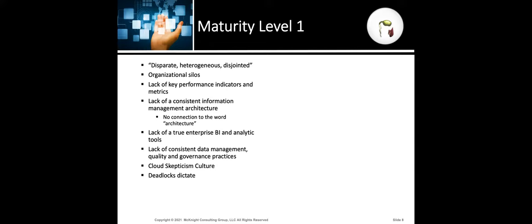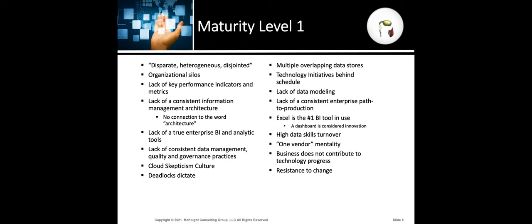Deadlocks dictate in these organizations — meaning you need 25 people to raise their hand before something can really happen, and if one person isn't on board, everything holds up even though the rest want to move forward. That is not a mature organization. Multiple overlapping data stores — you have the same data in multiple warehouses and multiple lakes. Technology initiatives are consistently behind schedule. There's a lack of data modeling — everybody has their firefighting hat on. There's a lack of a consistent enterprise path to production.